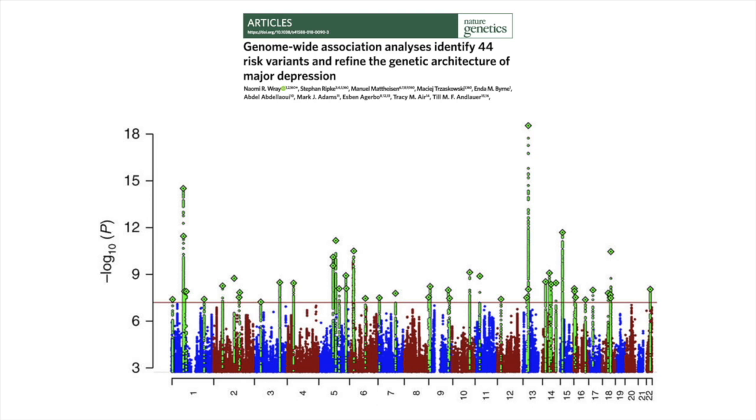In this GWAS, you can see 44 such towers reaching above the red line. This red line is the genome-wide significance threshold, a p-value of 5 times 10 to the minus 8, which corresponds to Bonferroni correction for multiple testing of 1 million variants.